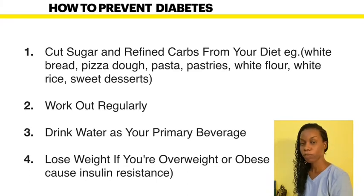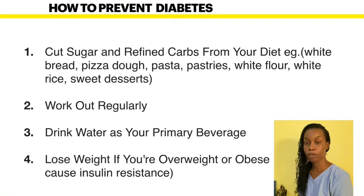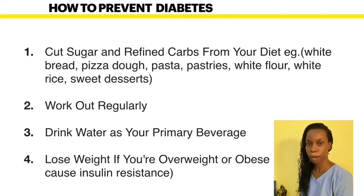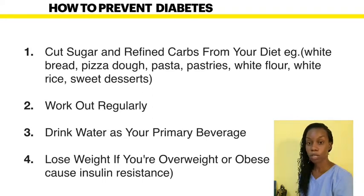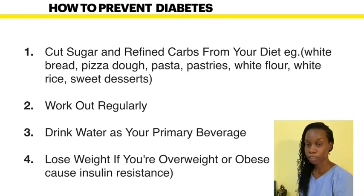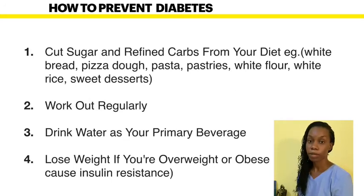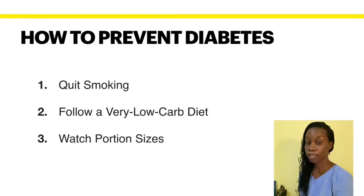How to help prevent diabetes: cut down on sugar and refined carbs. Refined carbs have had fiber and bran removed, so they break down faster in the body, causing blood sugar to rise more quickly. Work out more — exercise allows blood to flow easier through the body. Practice drinking water as your primary beverage, quit smoking, and focus on weight loss, since fat can cause insulin resistance.